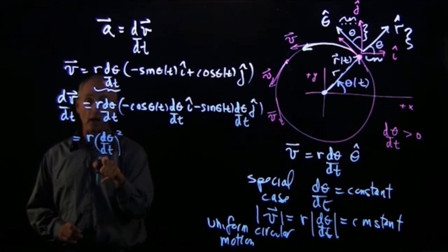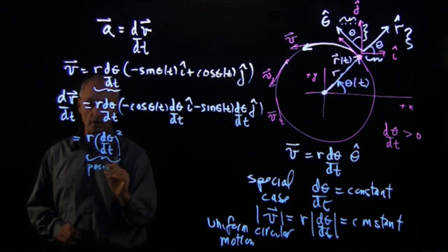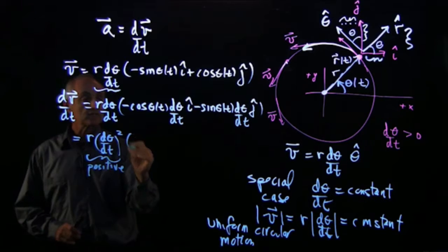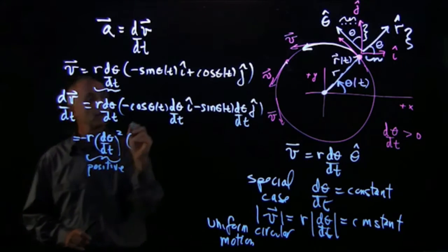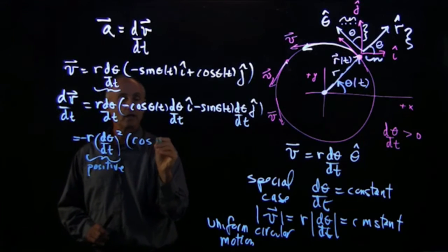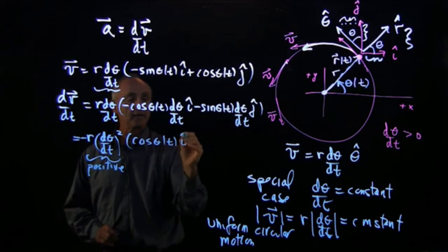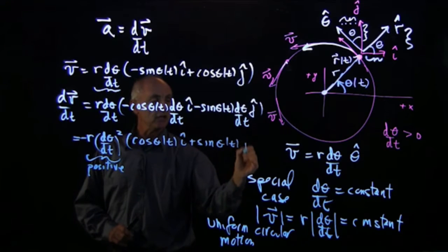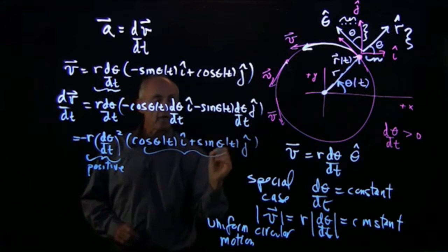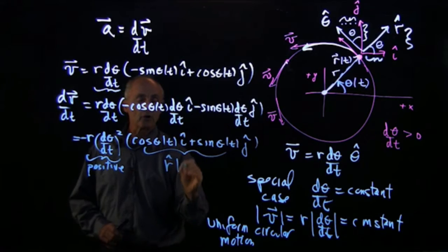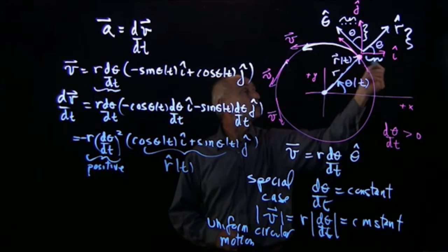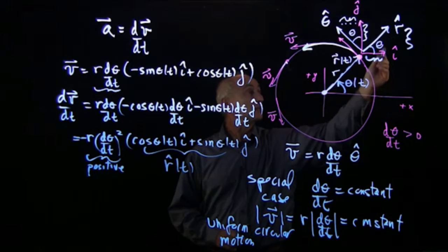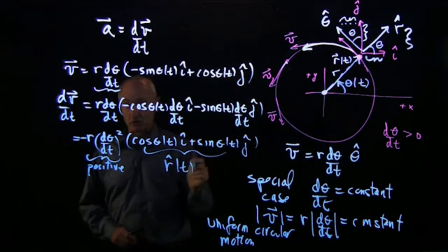Now, whether dθ/dt is positive or negative, the square is always positive. So this quantity is always positive. And inside, I'm also going to pull the minus sign out. And I have cosine θ(t) i hat plus sine θ(t) j hat. Now, what we have here is the unit vector r hat(t). r hat has a cosine adjacent in the i hat direction and a sine component in the j hat direction.